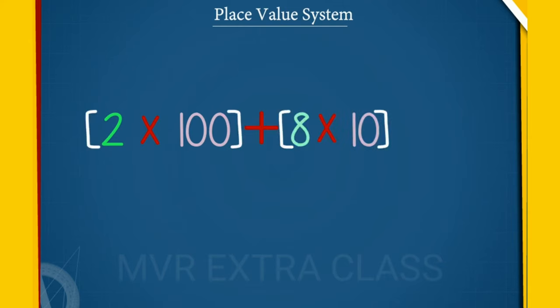2 into 100 plus 8 into 10 plus 5 into 1. So the expanded form is 285: 2 into 100 plus 8 into 10 plus 5.